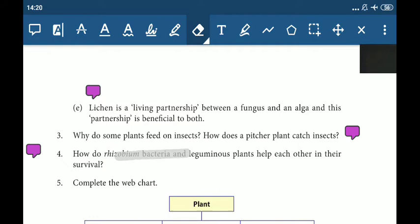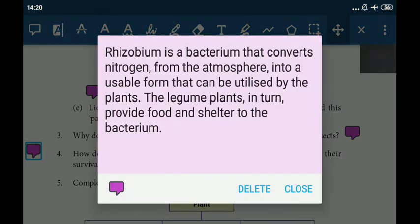How do Rhizobium bacteria and leguminous plant help each other in their survival? We have a concept of symbiotic relationship. Rhizobium is a bacterium that converts nitrogen from the atmosphere into a usable form that can be utilized by the plants. The legume plants in turn provide food and shelter to the bacteria.